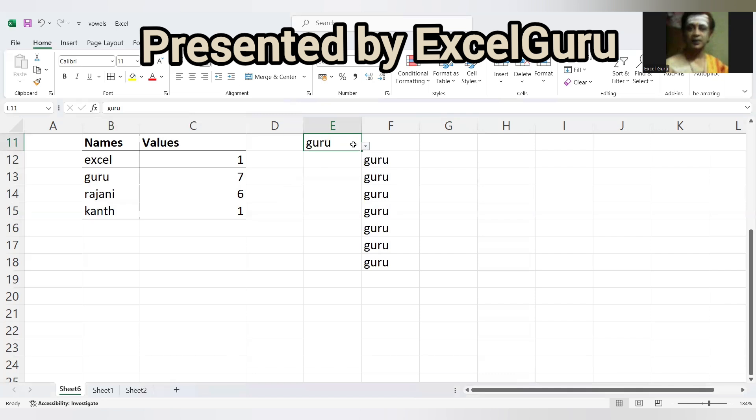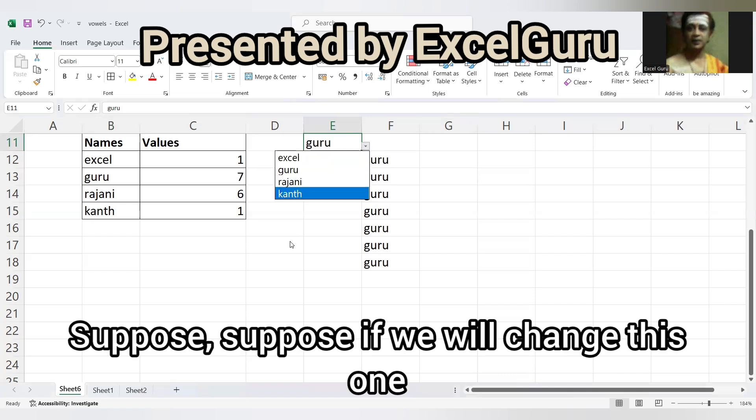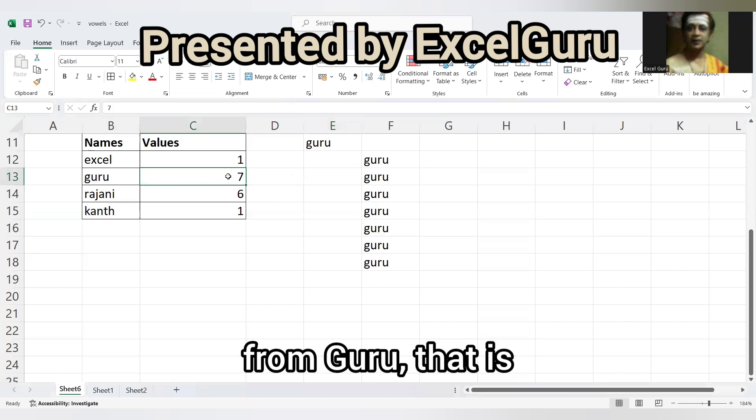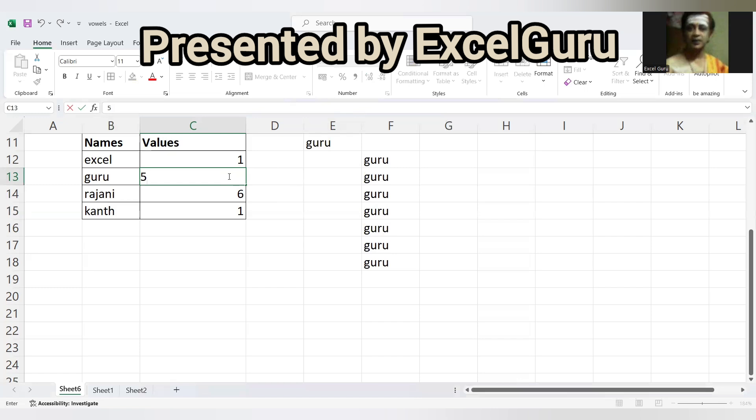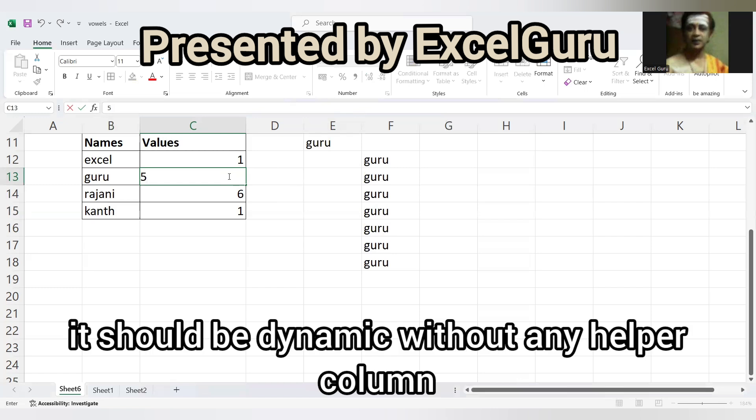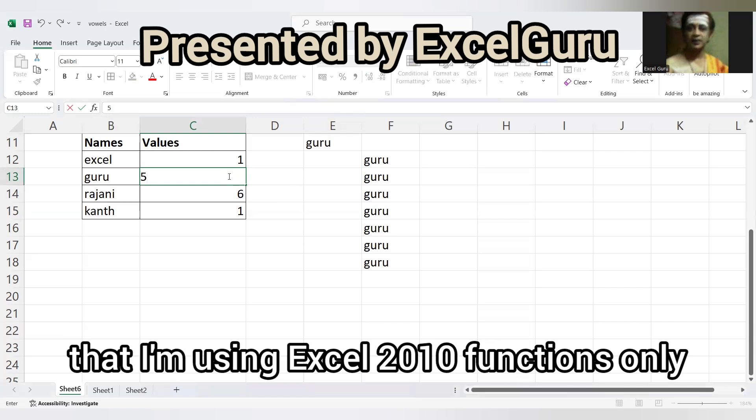Suppose if we change this one from Guru, that is five, it should be dynamic without any helper column. And not only that, I'm using Excel 2010 functions only. Everyone is easy to use and automatically it will reflect.